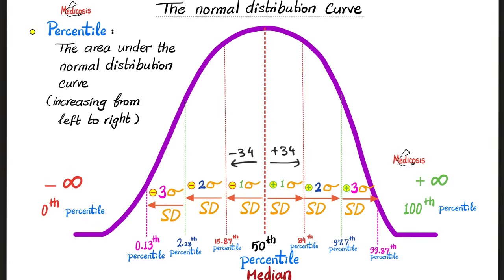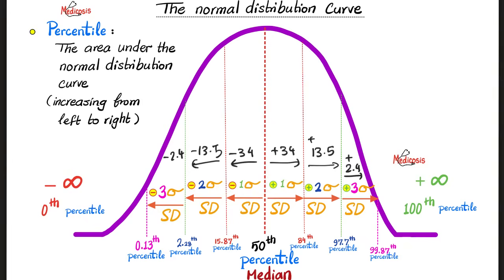So: 84th versus the 16th. How about another standard deviation to the right? I went from 84 to about 97.5 — a rise of about 13.5. How about 13.5 below? Negative one standard deviation was 16, so 16 minus 13.5 is 2.5. Next, from 2 to 3 standard deviations, I went from 97.5 to about 99.9 — an increase of 2.4. How about a decrease of 2.4? 2.5 minus 2.4 is 0.1. And this is where you find negative 3 standard deviations.